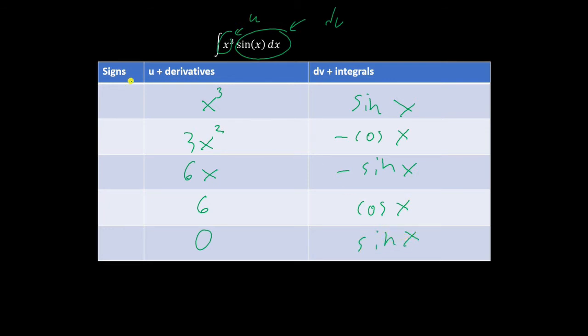Then on the left-hand column, fill in the signs starting with plus and then alternating. Now to get your answer, go one row across, and then one row down. Like that.